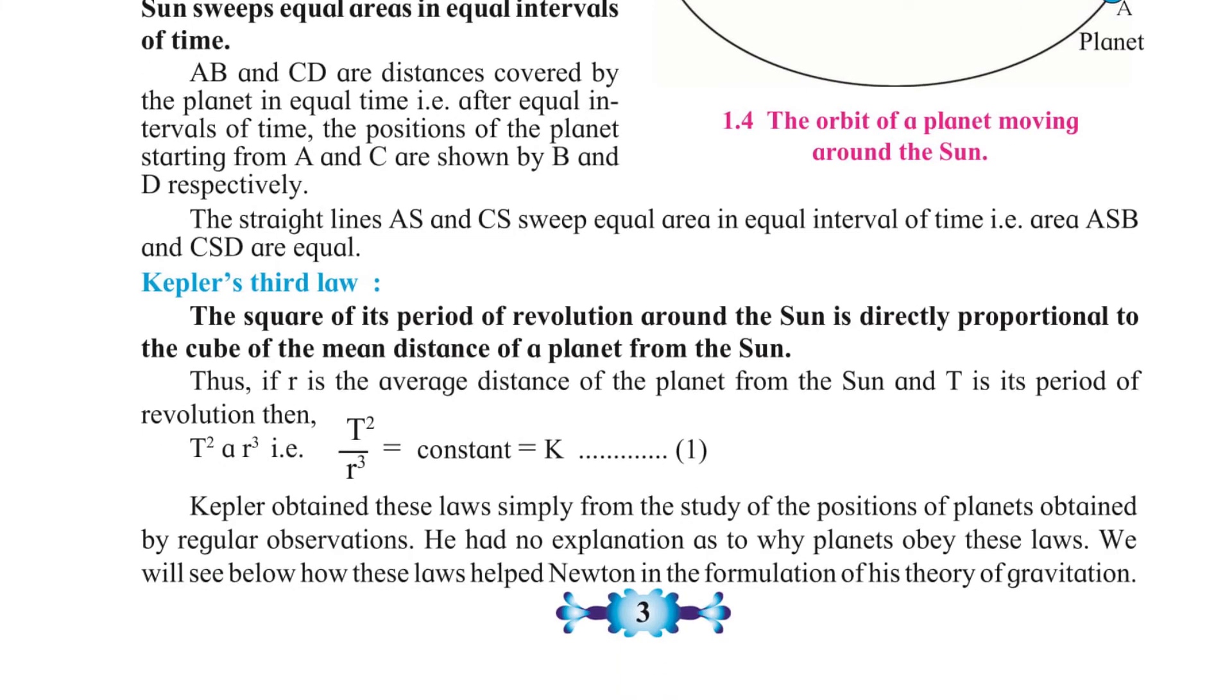What does the third law say? The square of its period of revolution around the sun is directly proportional to the cube of the mean distance of a planet from the sun. Thus, if r is the average distance of the planet from the sun and T is its period of revolution, then we will get one derivation.